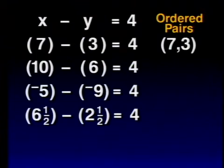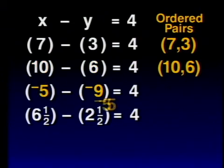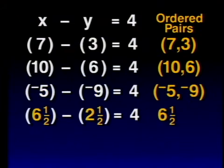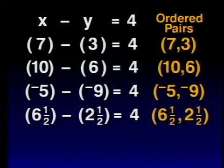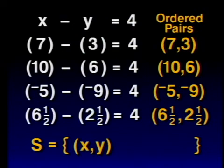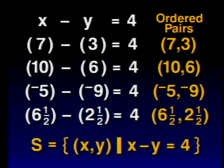Now, about that listing. We have already found a few solutions: the pair (7, 3), the pair (10, 6), the pair (negative 5, negative 9), and the pair (6 and 1 half, 2 and 1 half). We can quickly see that this is neither an organized nor an efficient way to show the solutions. Trying to arrange the pairs of integers is bad enough, but when you throw in the fraction possibilities, it becomes impossible. What about using the rule method? The set of all ordered pairs of the form (X, Y) such that X minus Y is equal to 4. Well, that's certainly true, but it doesn't really tell us anything. We're not going to get anywhere by making an actual set of solutions for this type of open sentence.